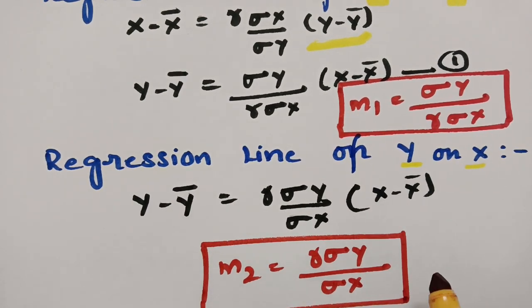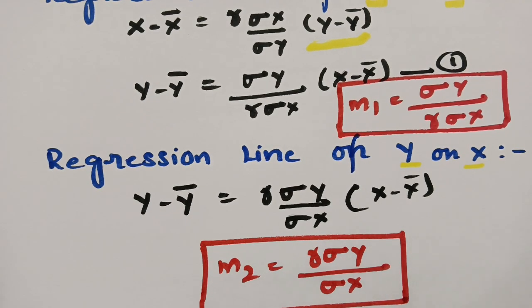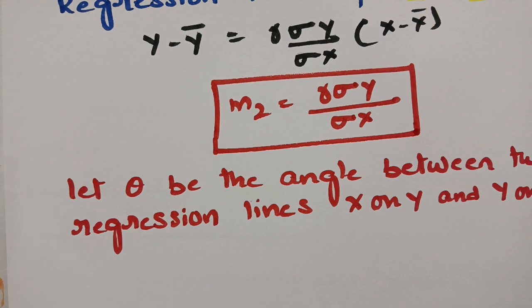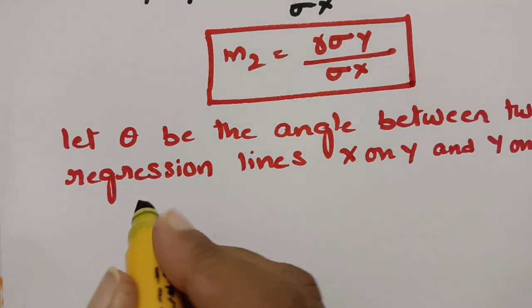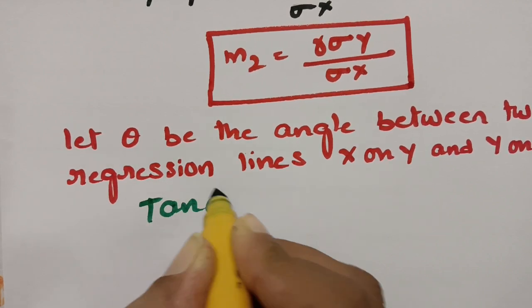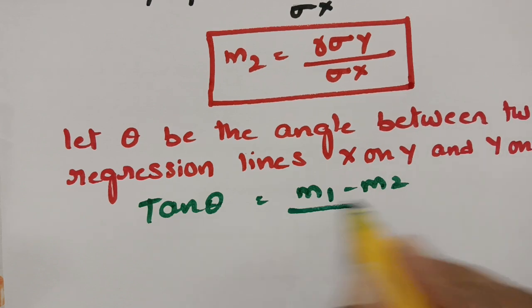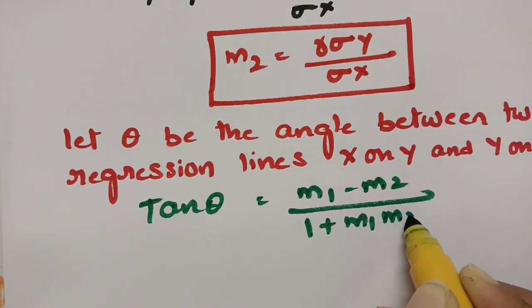After getting the two slopes we are ready to find the angle between the two regression lines. Let theta be the angle between the regression lines of y on x and x on y. The formula is: tan θ = (m₁ − m₂) / (1 + m₁ · m₂).